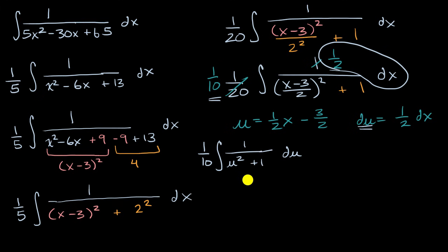Now you might immediately recognize, what's the derivative of arctan of u? That would be one over u squared plus one. So this is going to be equal to one-tenth times the arctangent of u. And of course, we can't forget our big constant c, because we're taking an indefinite integral.